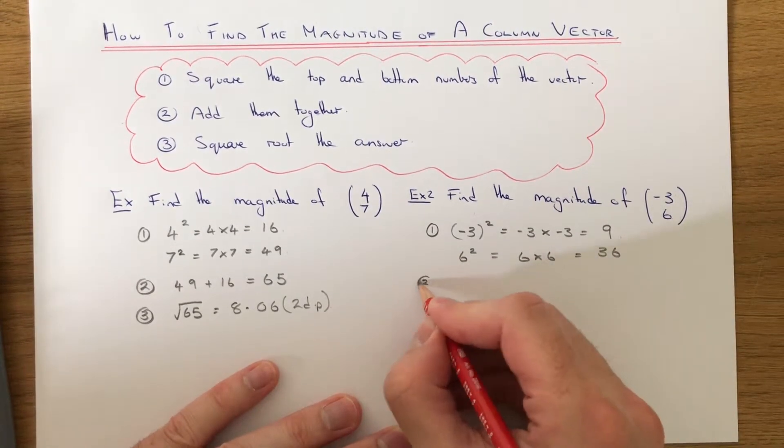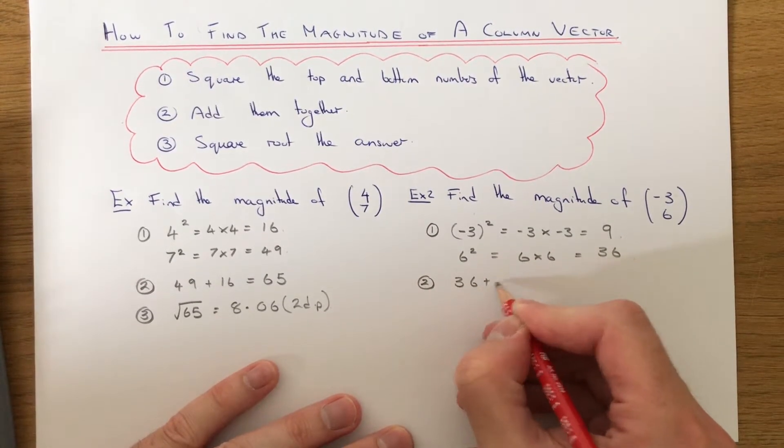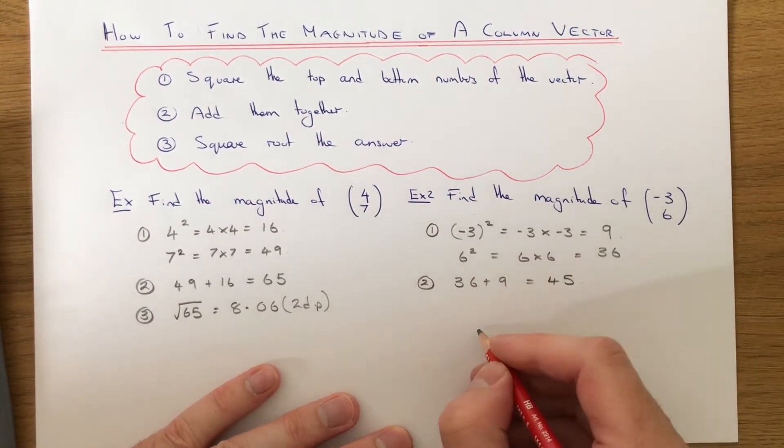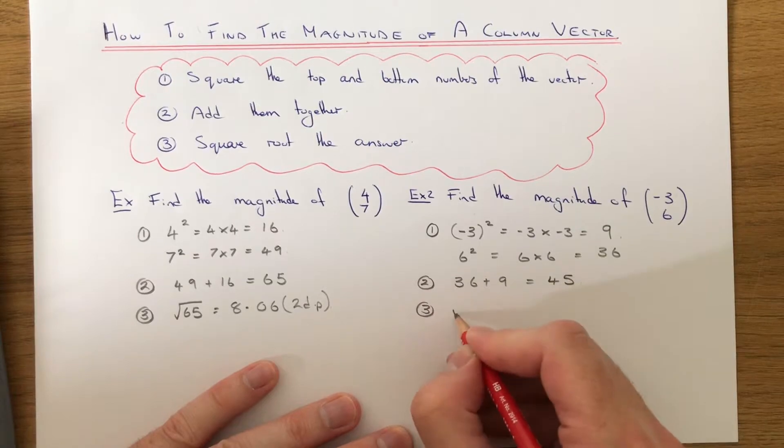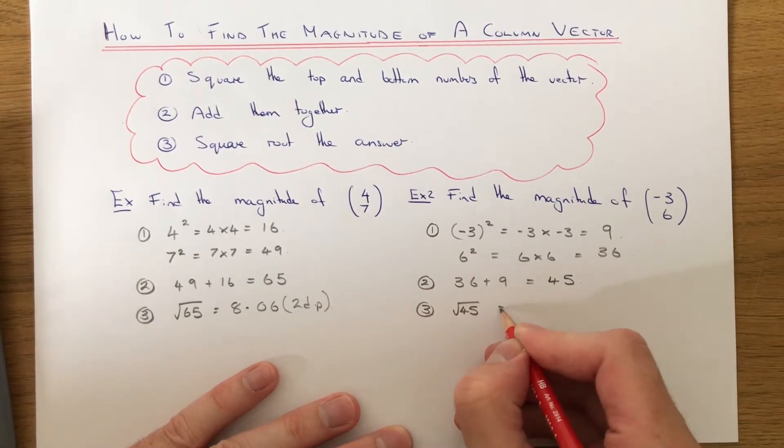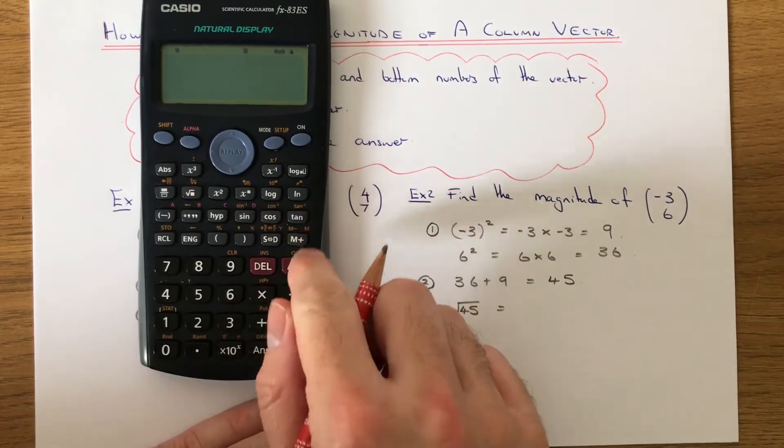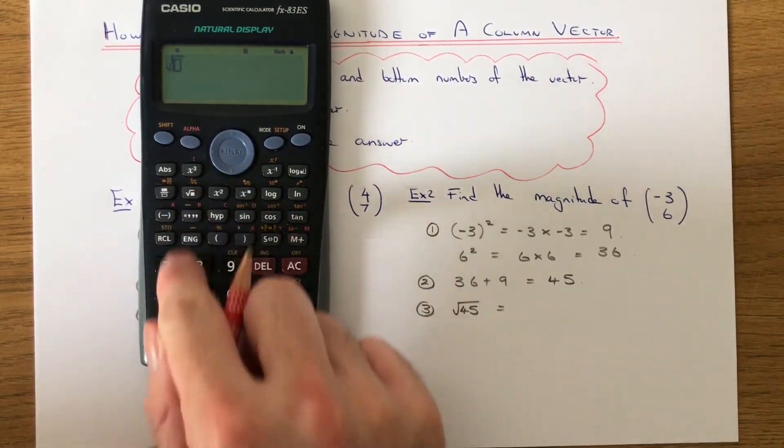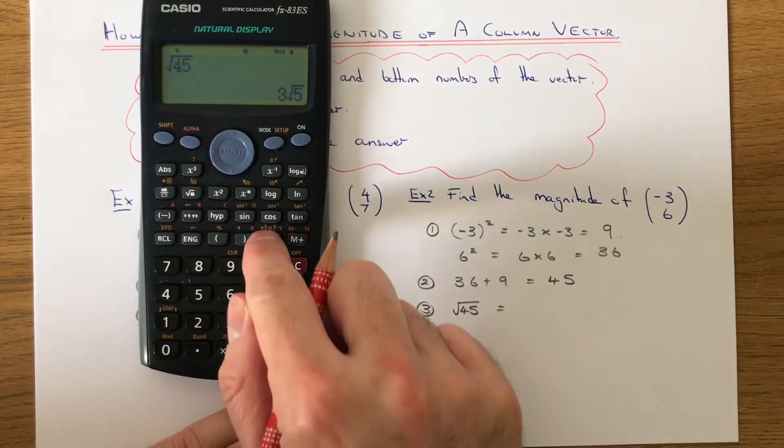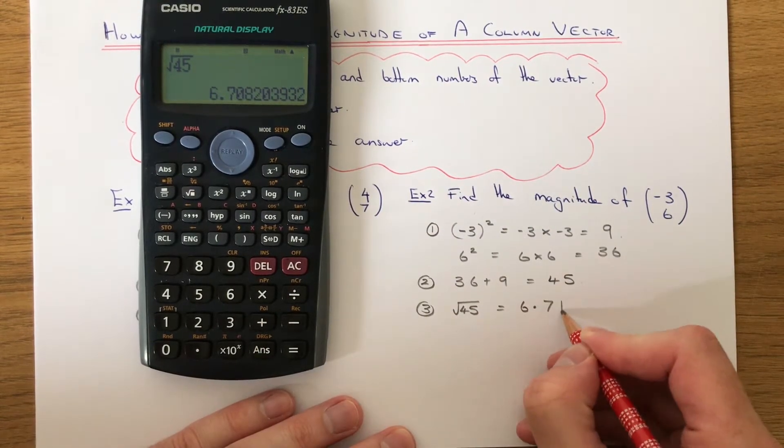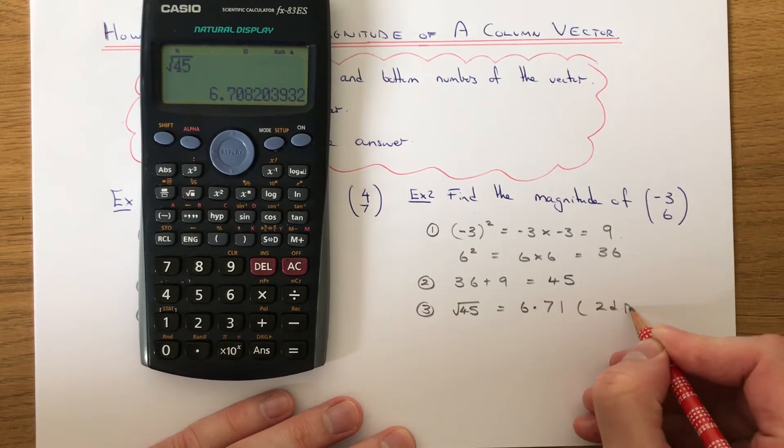We now add these two numbers together to give us 45. The final step is to square root this answer. Using the calculator, the square root of 45 is 6.71 to two decimal places.